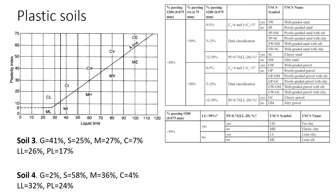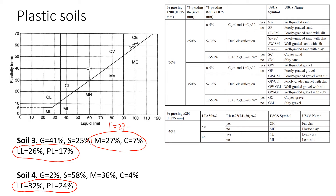Now let's look at two plastic soils: Soil 3 and Soil 4. Both have plasticity, which we know because we are given liquid limit and plastic limit for both cases. For Soil 3, fines equal 27 plus 7, giving 34 percent — still less than 50 percent, so we use the top part of the chart. We then find the plasticity index: 26 minus 17 gives 9 percent.